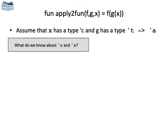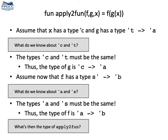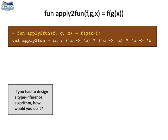So, let's see how the ML algorithm works for this function apply2fun, on the top of the figure. In this example, what do we know about the types of g and x? The input type of g must be the same type of x and g. We know that the return type of g must be the input type of f. And from these relations, we infer the type of the entire function apply2fun.